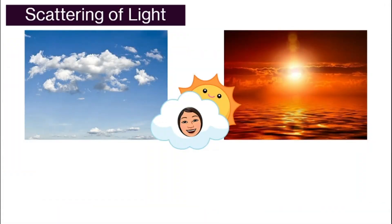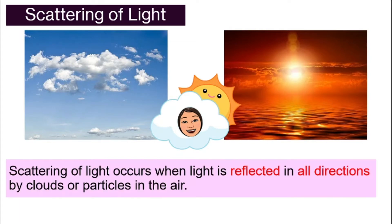Well, this is because of the scattering of light. What do you mean by the scattering of light? Scattering of light occurs when the light is reflected in all directions. Remember the reflection of light that we talked about earlier a few topics ago? When a light is being reflected by the plane mirror — so when the light is being reflected now in all directions, by the clouds and particles in the air, that is called the scattering of light because it is reflected all over the place.